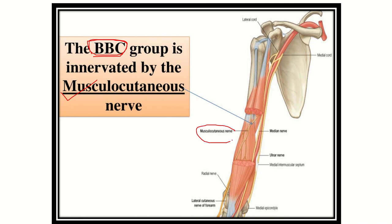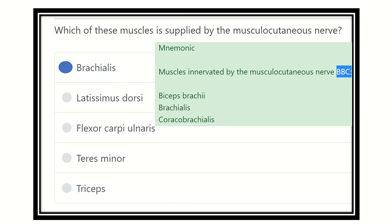Here we can see the musculocutaneous nerve supplying the biceps muscle — with its two heads — then coracobrachialis, which arises from the coracoid process, and then brachialis. These three muscles are supplied by the musculocutaneous nerve.